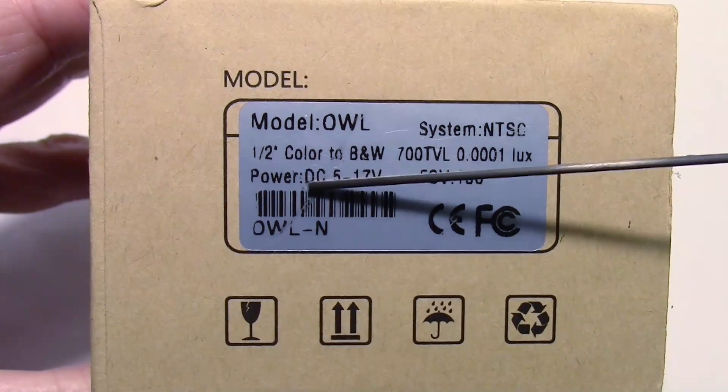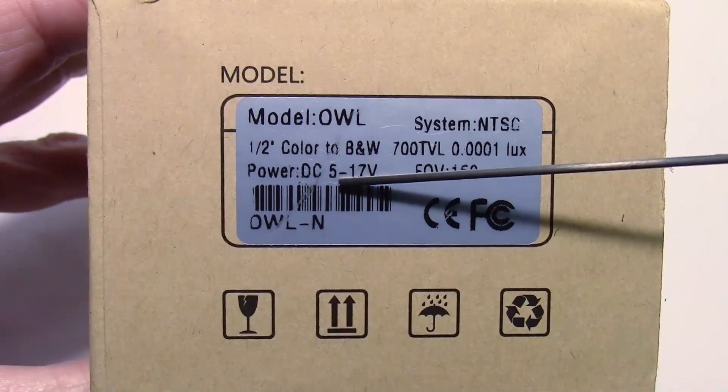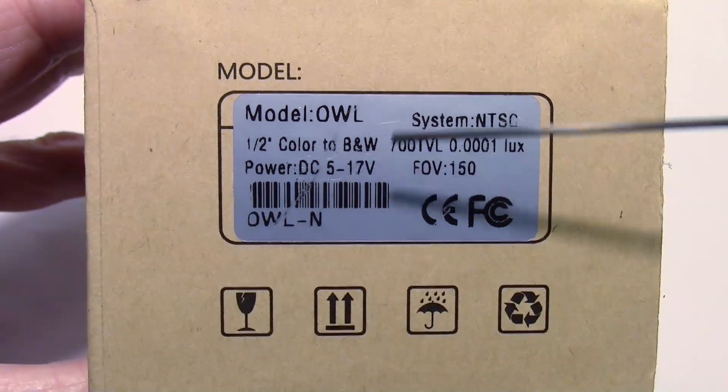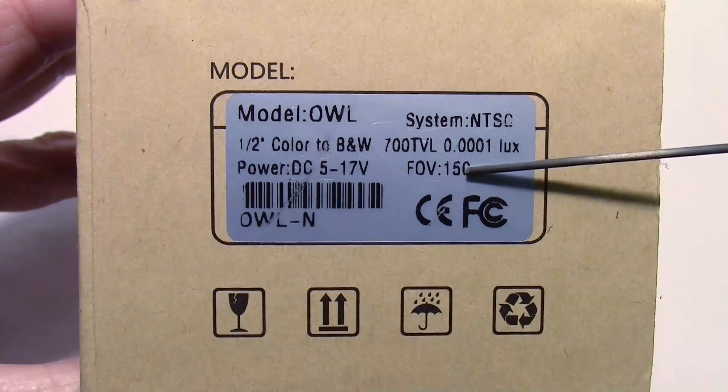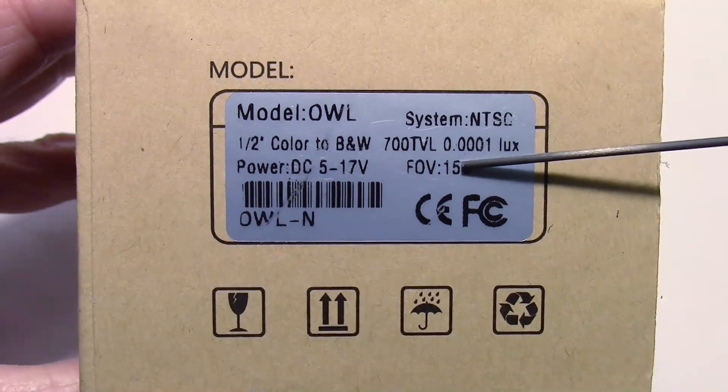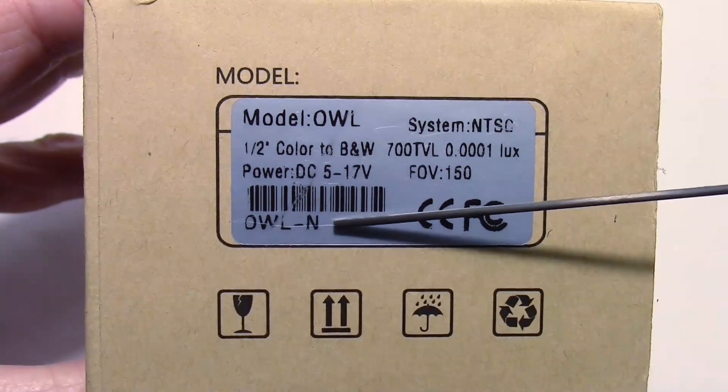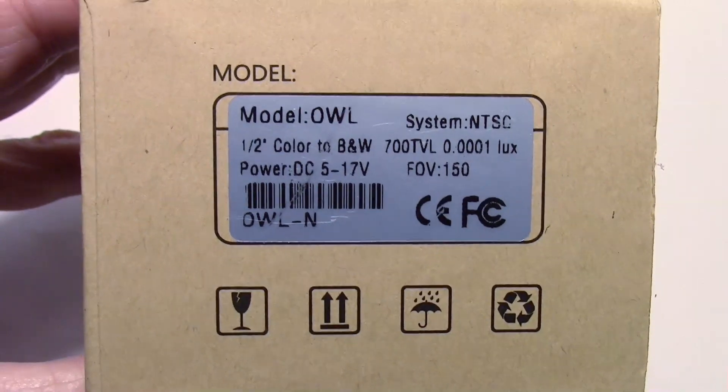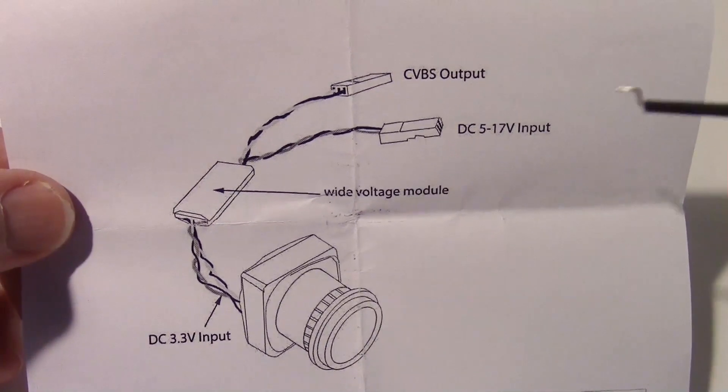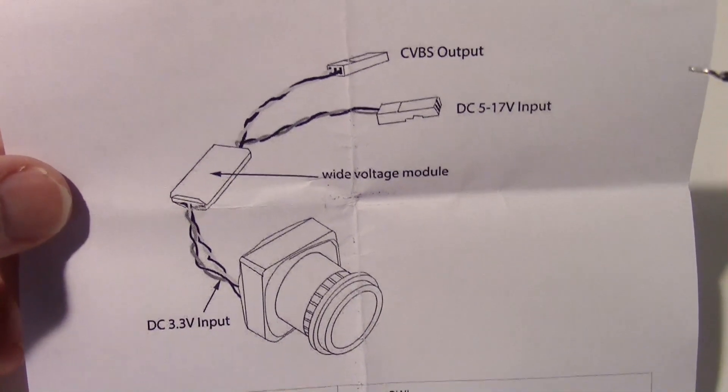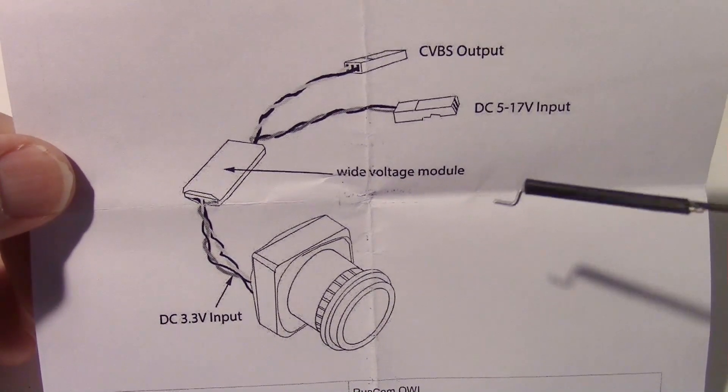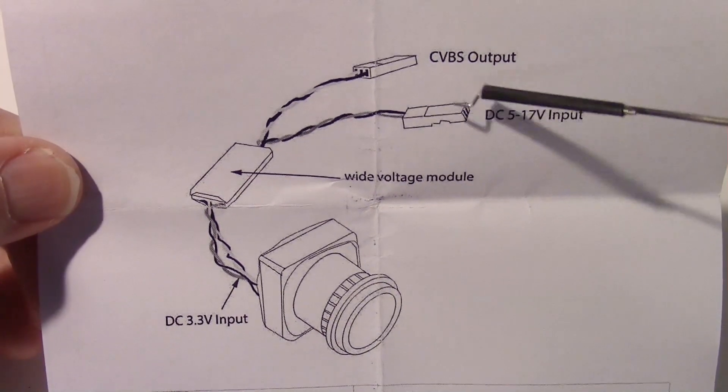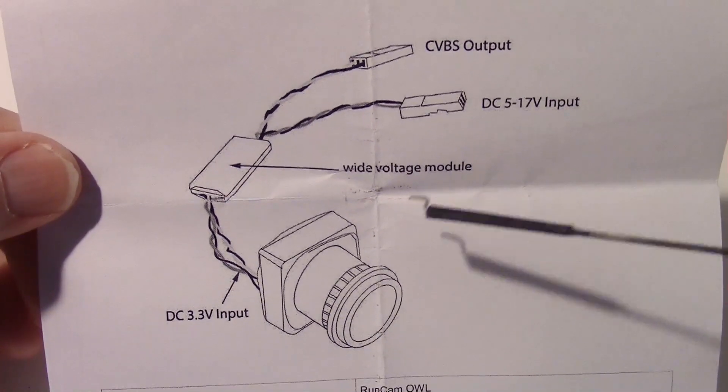It's got a voltage range of 5 volts to 17 volts through a regulator. Field of view is 150 degrees. This is supposed to work in low light conditions—it's not really a night vision camera, but it works in low light like under parking lot lights or maybe with a full moon.